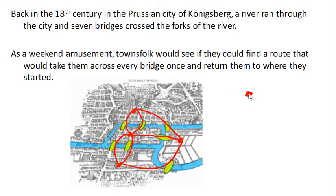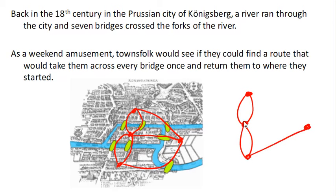So our graph ends up looking like — you can really see it over there, but in case you're having trouble, it looks like this. And so the question we could ask is: is it possible to find a route that would take them across every bridge once and return them to where they started?